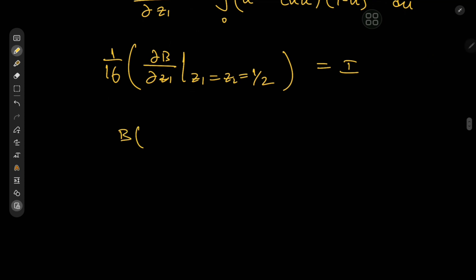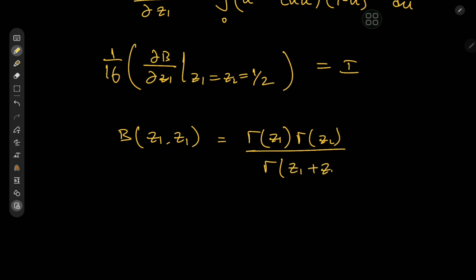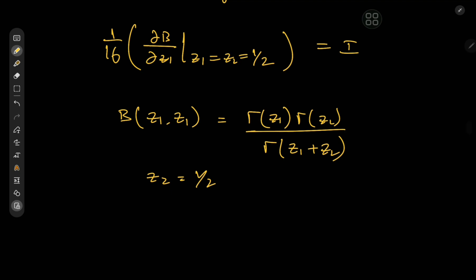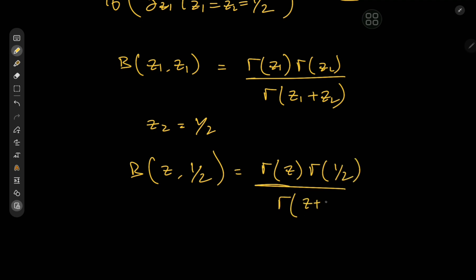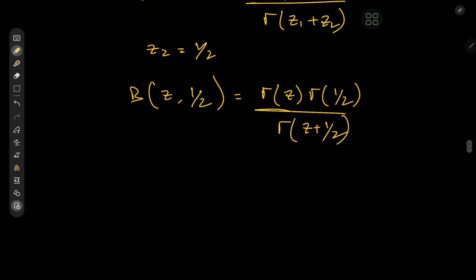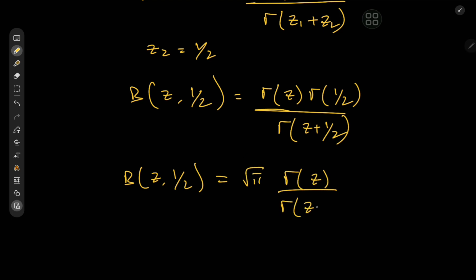We call on the beta function's cooler cousin, the gamma function: β(z1, z2) = Γ(z1)·Γ(z2) / Γ(z1 + z2). Since we're differentiating partially with respect to z1, we fix z2 = 1/2, giving β(z, 1/2) = Γ(z)·Γ(1/2) / Γ(z + 1/2). Since Γ(1/2) = √π, we have β(z, 1/2) = √π · Γ(z) / Γ(z + 1/2).